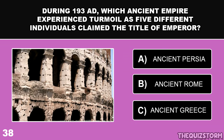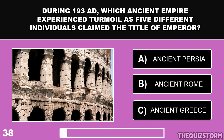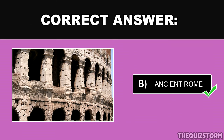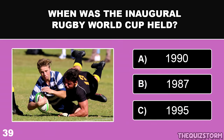During 193 AD, which ancient empire experienced turmoil as five different individuals claimed the title of emperor? And the correct answer is ancient Rome.